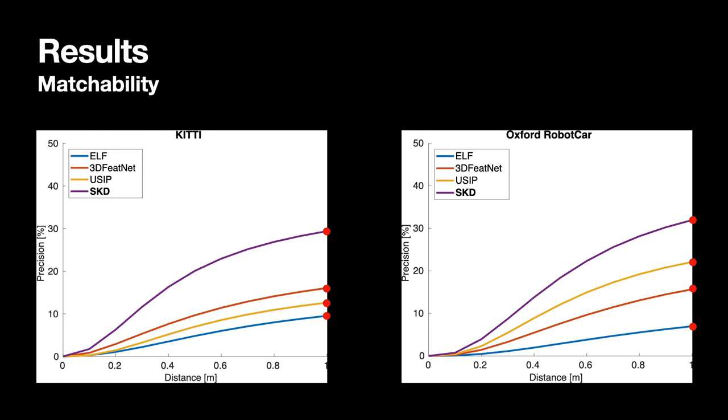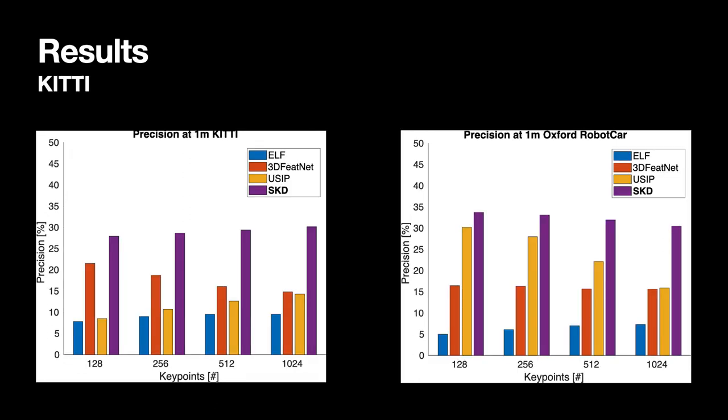Next, we took the values at 1 meter distance and computed how they would change if we altered the number of extracted keypoints. In these two bar charts, you can see the performance of each method on the KITTI dataset on the left and the Oxford RobotCar dataset on the right. Each column shows the four bars for each method at varying number of keypoints from 128 to 1024 keypoints. The y-axis represents the percentage at 1 meter distance, as explained previously. We can see that the performance of SKD is not greatly influenced by the varying number of keypoints. This is likely due to generating the keypoints in the same areas.